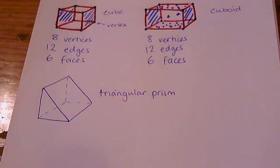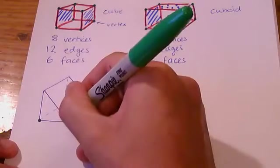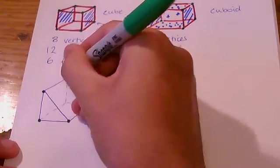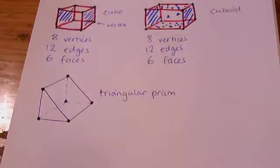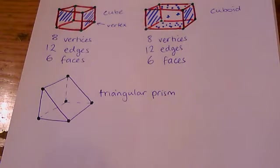And with this triangular prism, we can apply our method to find the number of vertices. Just put dots on each corner. There are 6 of them. 6 vertices.